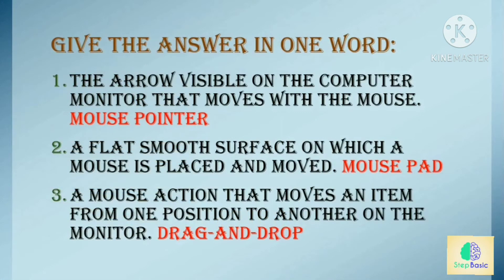Give the answer in one word. The arrow visible on the computer monitor that moves with the mouse — answer is mouse pointer. A flat smooth surface on which a mouse is placed and moved — the answer is mouse pad. A mouse action that moves an item from one position to another on the monitor — answer is drag and drop.